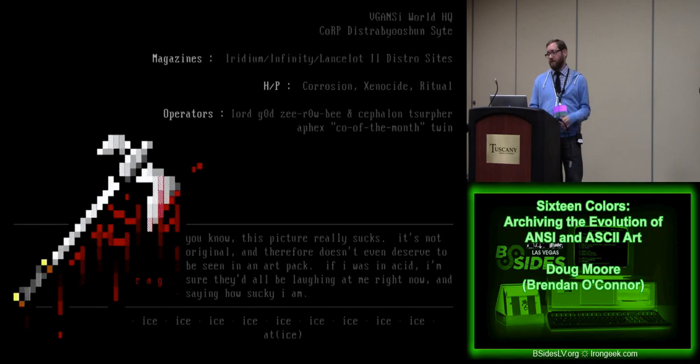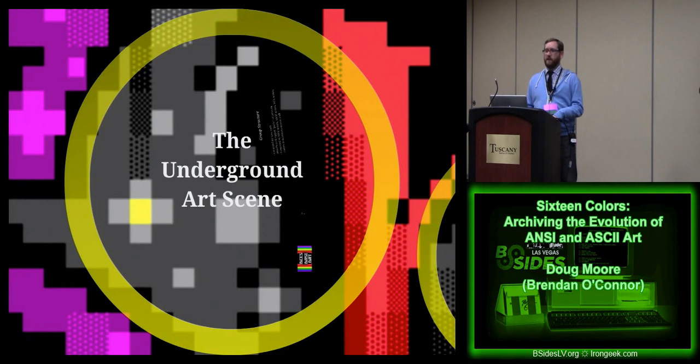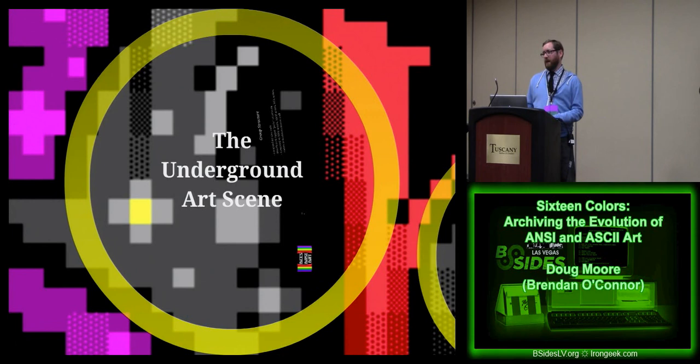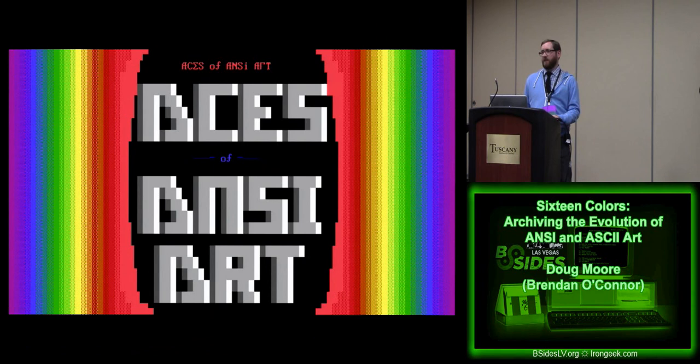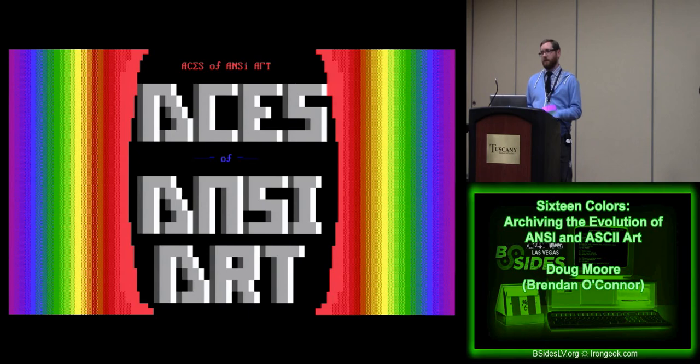Out of bulletin board systems and ANSI art, a scene starts to develop. People start fracturing off into little groups — that's what we know as the underground art scene. The first group that came about was Aces of ANSI Art, otherwise known as AAA. It was really just an affiliation — when they drew their ANSI, they put their handle on it, put AAA next to it, and that was it. But shortly after AAA, Acid and Ice were formed.